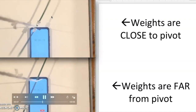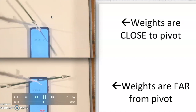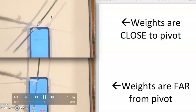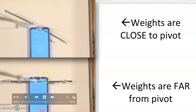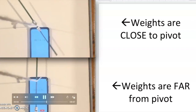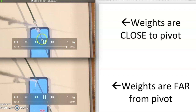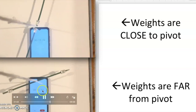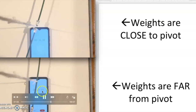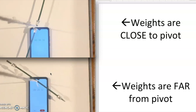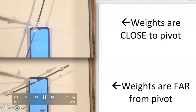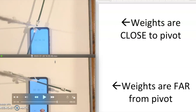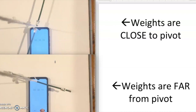That's a pretty dramatic difference. The one where the weights are positioned close to the center is spinning very easily, whereas the one where the weights are positioned far away is slow — it's taking a long time to spin. The top one already finished its 10 revolutions, and this one is still going. It's taking way more time to complete its journey through 10 revolutions.